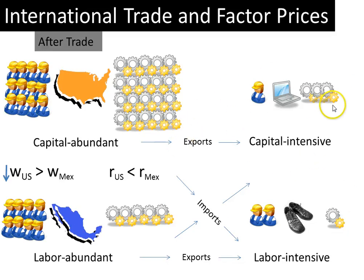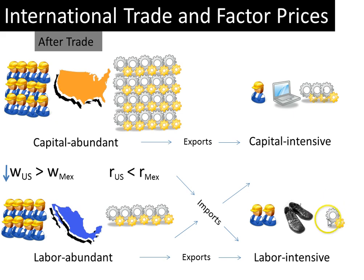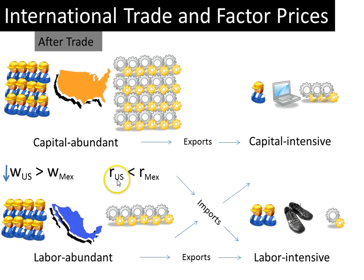What's going to happen in the capital factor market in the U.S.? As laptop production goes up, the demand for capital is going to go up by quite a bit, because laptops are a capital intensive good. As shoe production falls, the shoe industry will free up capital, but only a tiny bit, because shoes were using only a little bit of capital to begin with. So there is a large increase in the demand for capital but only a small increase in supply. When demand increases a lot more than supply, the price goes up — and the price of capital is the real interest rate. So in the U.S., the real interest rate is going to go up.